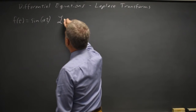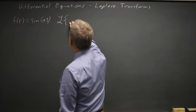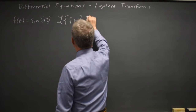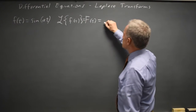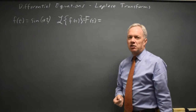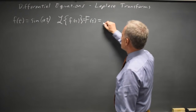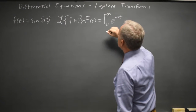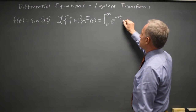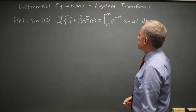The Laplace transform is written as a script uppercase L with set brackets, or as uppercase F of s. It's defined as an integral transform: the integral from alpha to beta of K(s,t) times f(t) dt. In this case, alpha and beta are 0 and infinity, K(s,t) is e to the negative st, and f(t) is sine of at, where s is a variable and a is a constant.